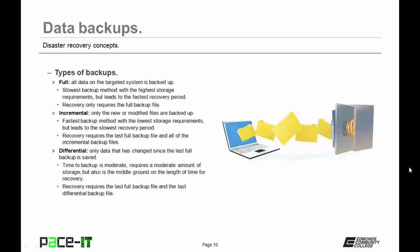And finally there's the middle ground, which is a differential backup. Only data that has changed since the last full backup is saved. The time to backup is moderate and it requires a moderate amount of storage, but it's also the middle ground on the length of time for recovery. With the differential type backup process, the recovery requires that the last full backup file be used and the last differential backup file. That's why it's the middle ground between the other two.